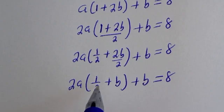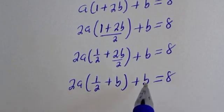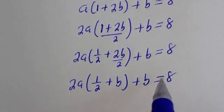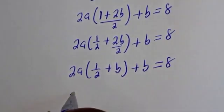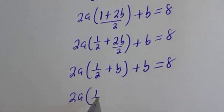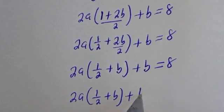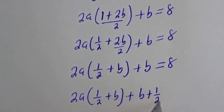Here we have 1 over 2 plus b. In order to make this 1 over 2 plus b, we need to add 1 over 2 to both sides. This is 2a bracket 1 over 2 plus b, plus b plus 1 over 2.